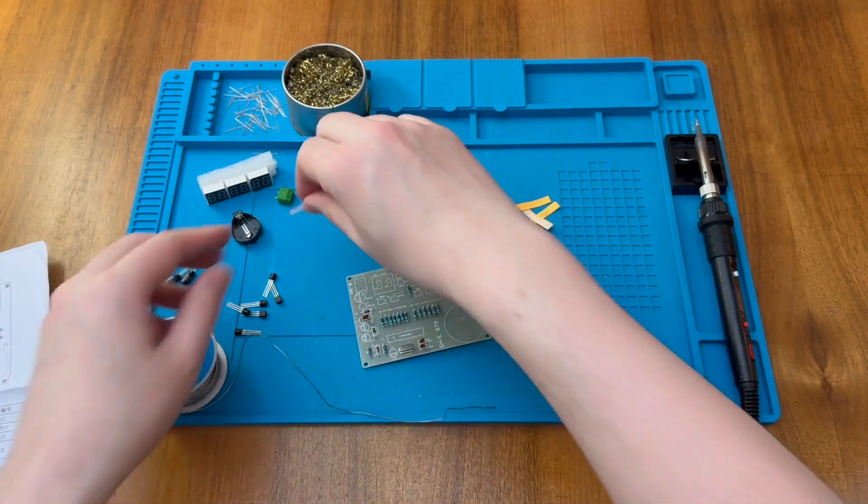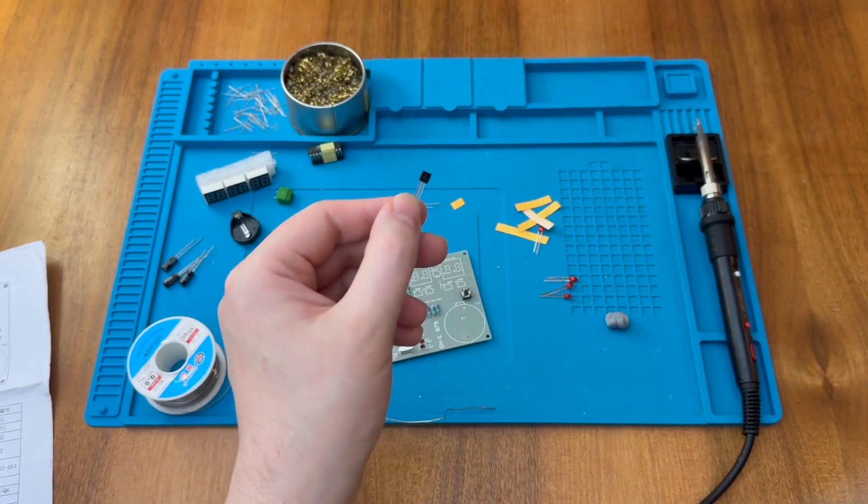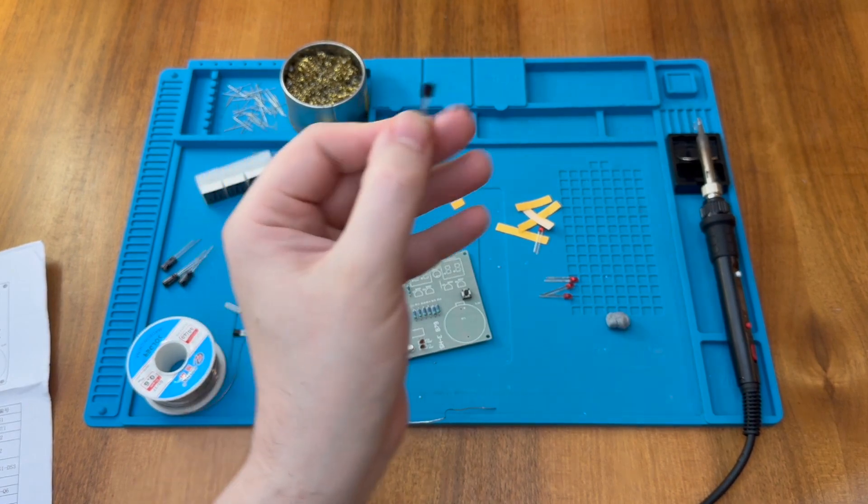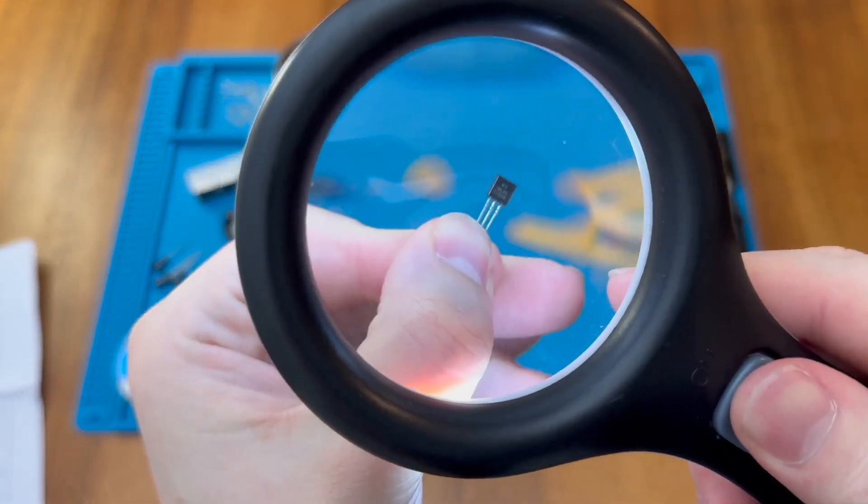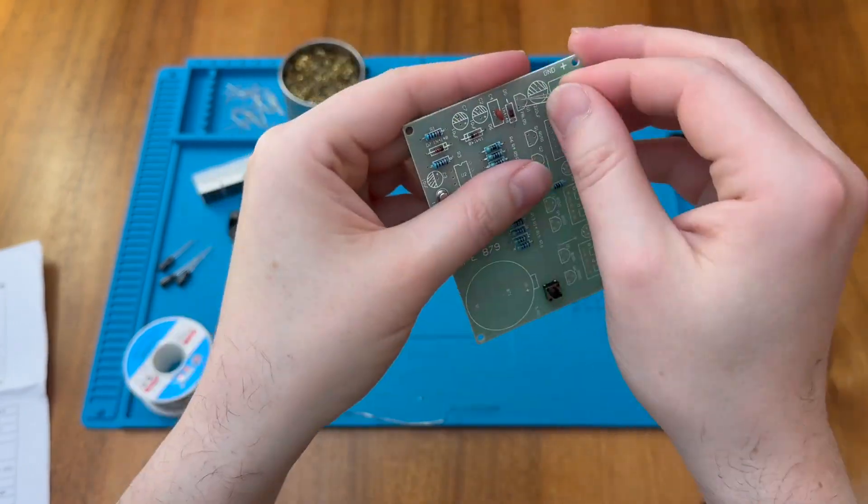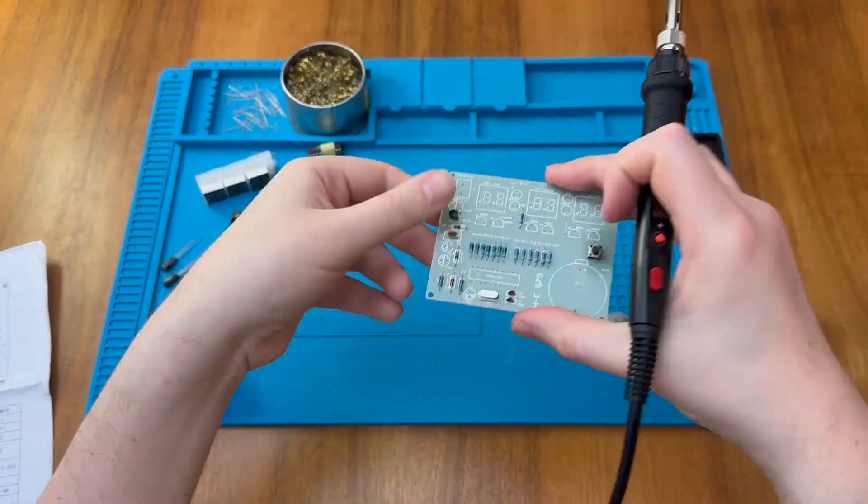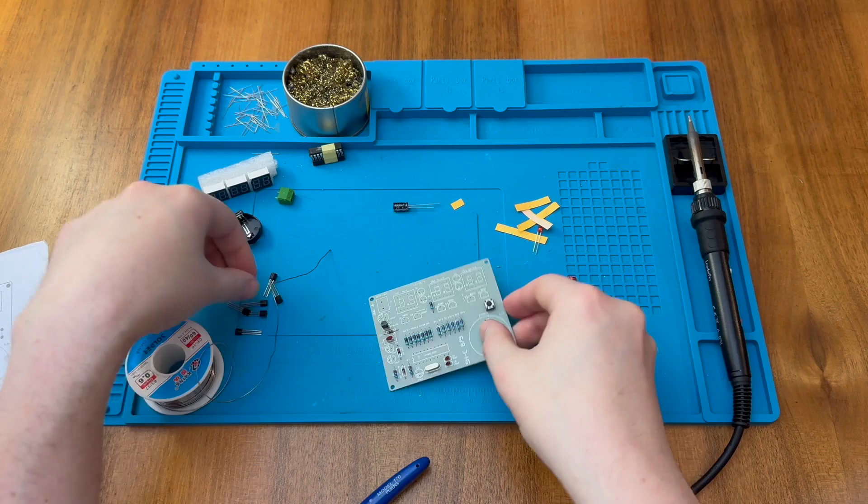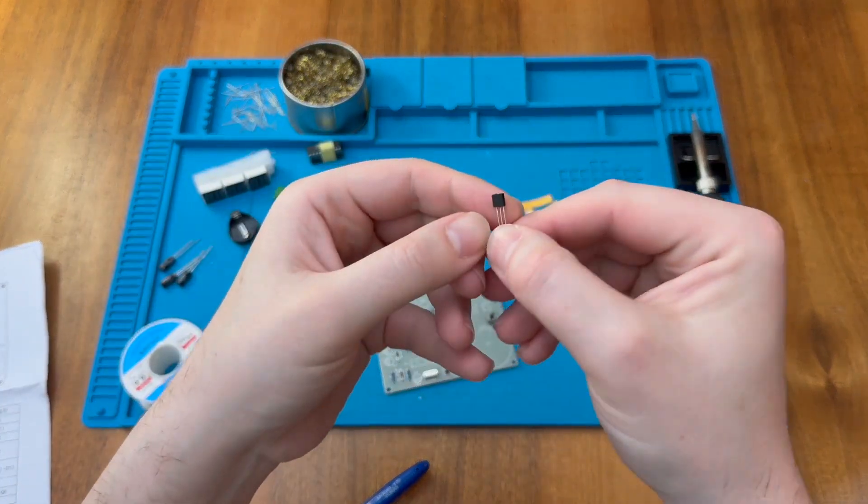So let's make sure we have identified our voltage regulator, and we might put that one in first, a 78L05.